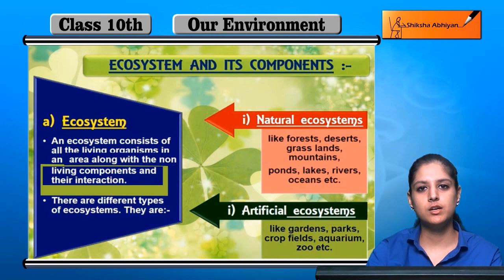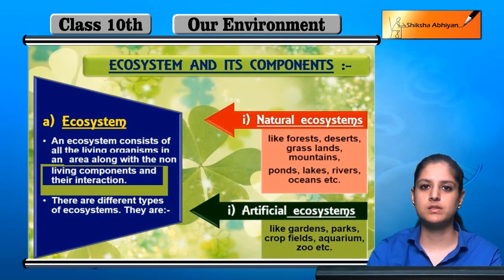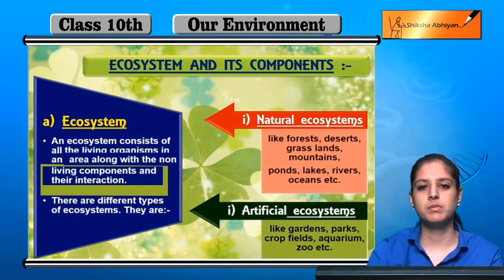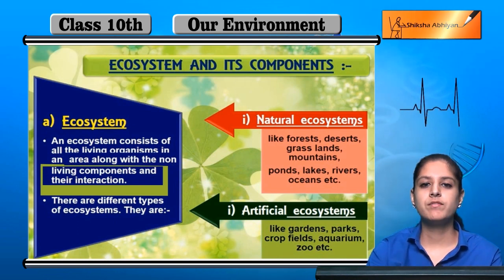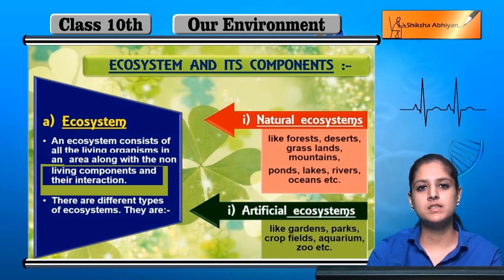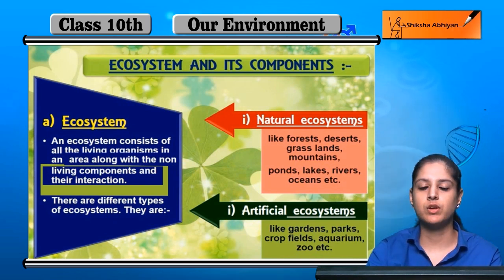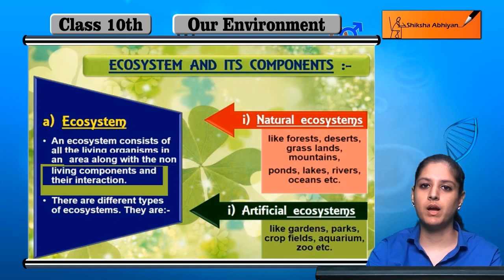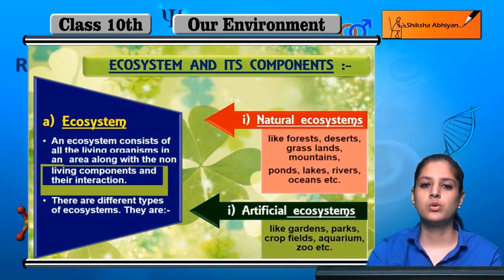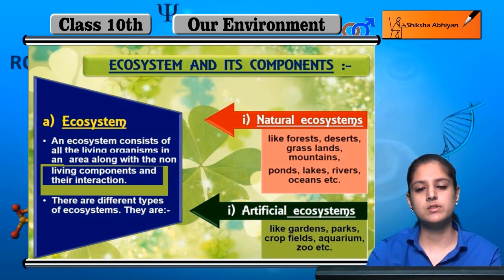Our next topic is ecosystem and its components. First, we have seen how waste products are added to the environment and how the environment can degrade. We looked at what types of waste products are differentiated: biodegradable and non-biodegradable, and we have seen the result of this.